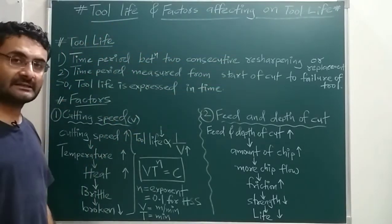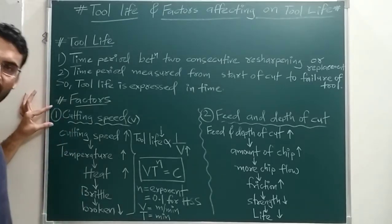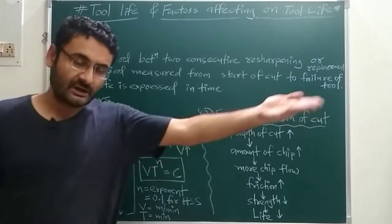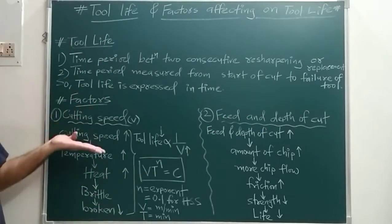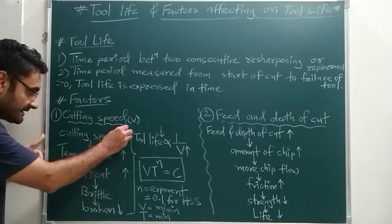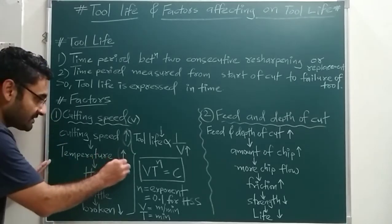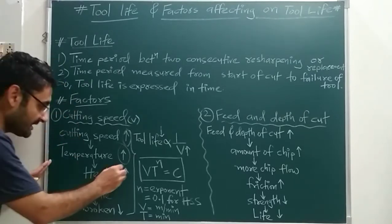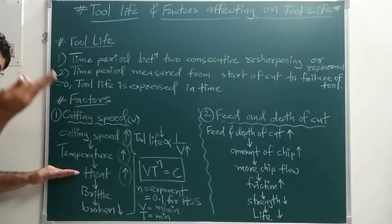Now we will discuss the factors affecting tool life. There are five important factors, discussed one by one. The first factor is cutting speed, denoted by V. In the case of a lathe machine, if you increase the cutting speed, more temperature is produced between the tool and the workpiece. The temperature of the tool increases and more heat is generated on the tool, meaning the tool will be heated to its maximum level.